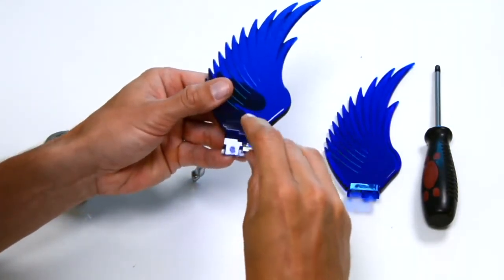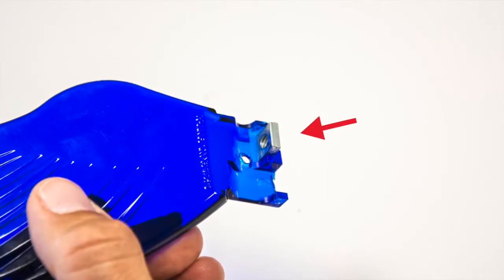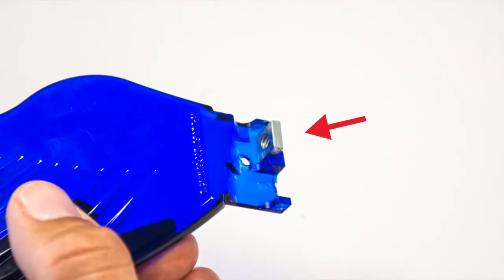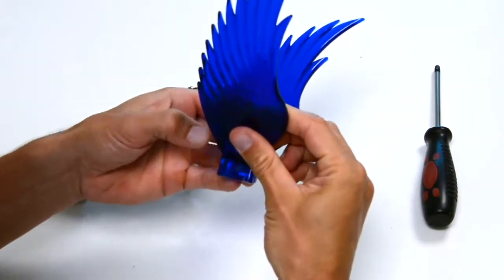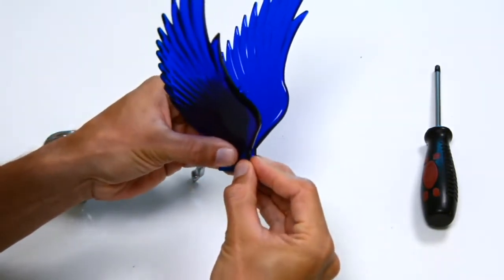Insert square nut into base of the wing. Using your other hand, hold both wings together while maintaining wings and nut in a steady position.